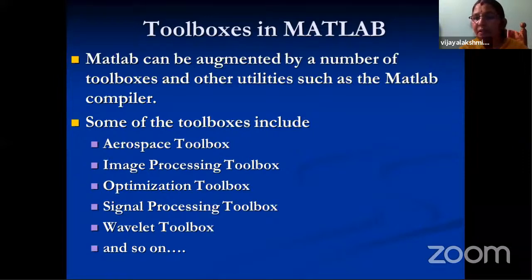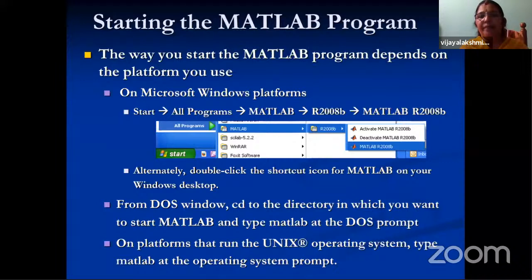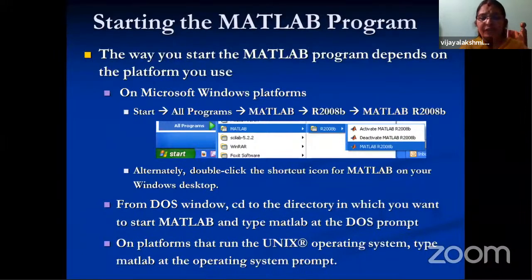To start the MATLAB program, it depends on the platform. On a computer, go to Start, then inside MATLAB, select the latest version — currently 2020B — then activate and open MATLAB. You can also enter via the MS-DOS window using the CD command to navigate to your desired directory. On other platforms like Unix, the same is possible. The steps are: go to Programs, then MATLAB, then select the version.